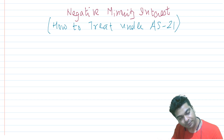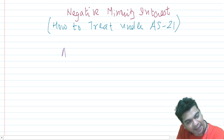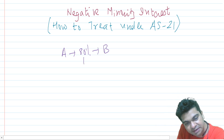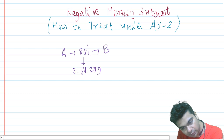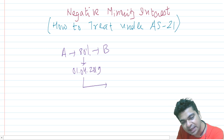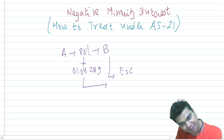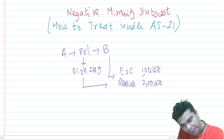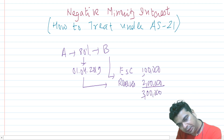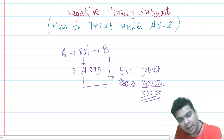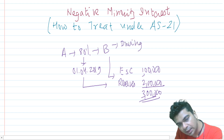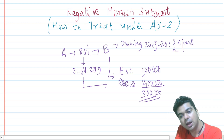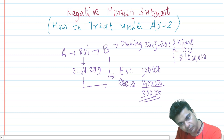Let's take an example. Company A has acquired 80% shares of B, so B is the subsidiary company. Let's say this was acquired on 1st April 2019. On that date, B's equity share capital is one lakh and its reserves are two lakhs, so the total net assets is three lakhs. Now let's say during 2019-20, company B incurs a loss of rupees 10 lakhs.